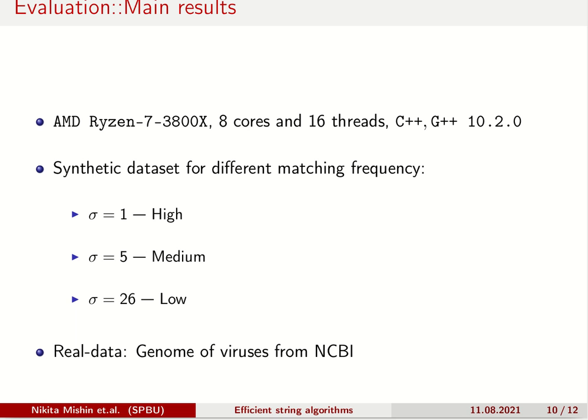Now, let's talk about our current results. The experiments were performed on a workstation with 8 cores and 16 threads. Both synthetic and real-life strings were used as input. Synthetic strings were obtained as randomly generated integer sequences, with character samples from a normal distribution with 0 mean and standard deviation sigma. By varying parameter sigma, we can emulate different scenarios for high, medium and low matching frequencies. Real-life strings represent some viruses.